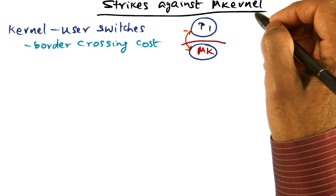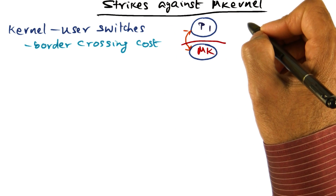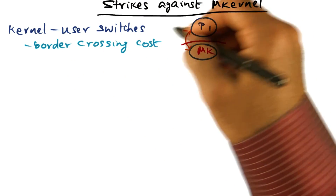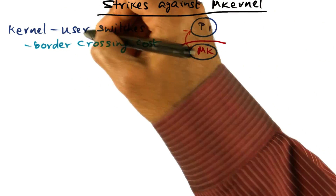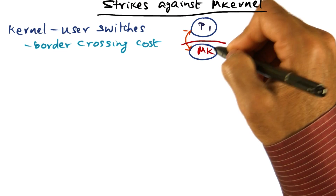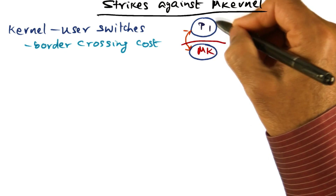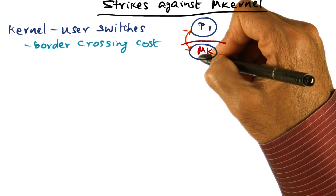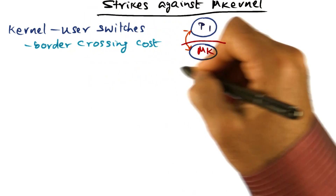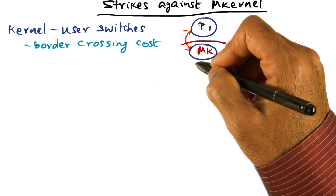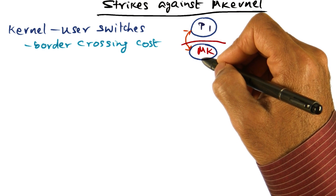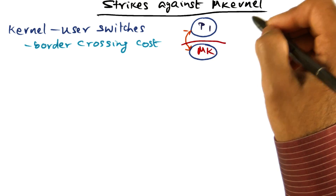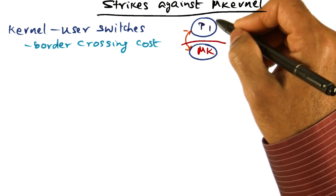What are the strikes against a microkernel-based design? The first strike is the border crossing cost of going between kernel and user space and vice versa. You have to do this every time a user-level process makes a system call — you have to go through the kernel. That's the border crossing cost, and it can be a strike against microkernel if this were to happen too often.